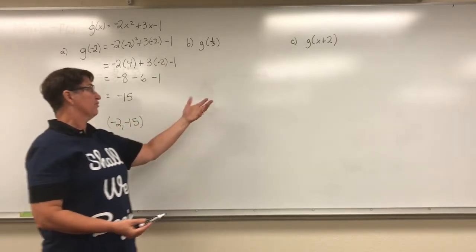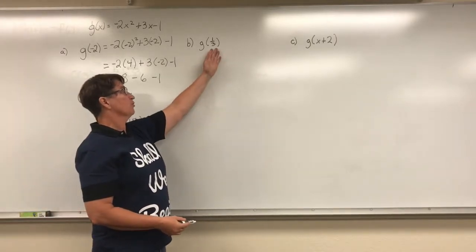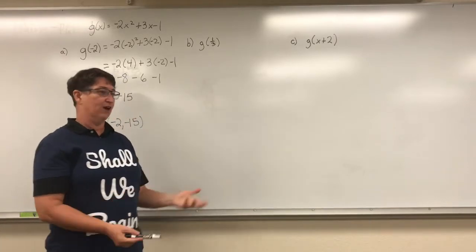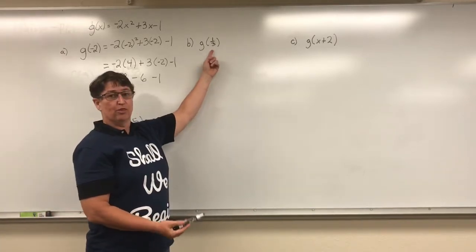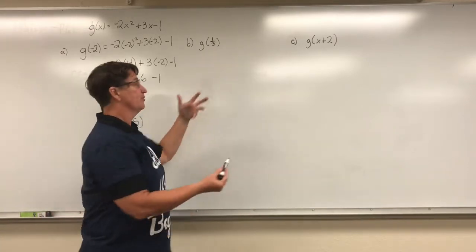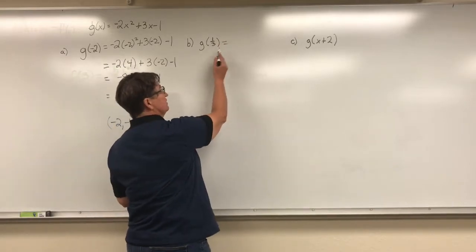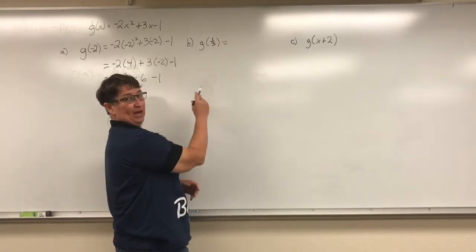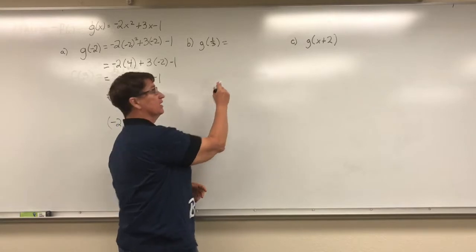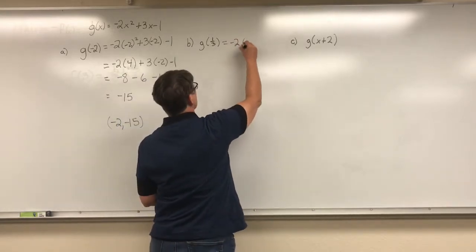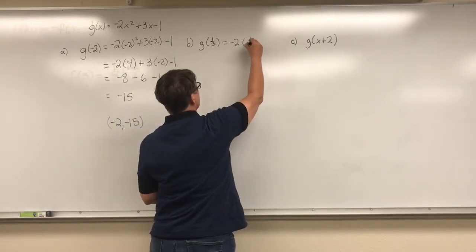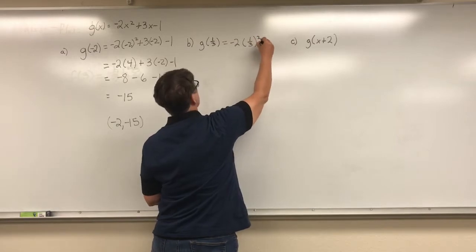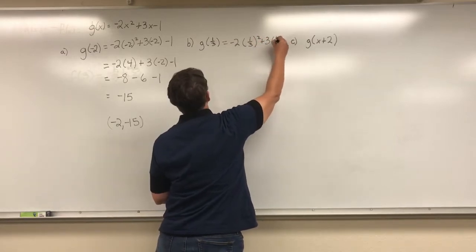We're going to do another one. This time we're going to evaluate the function — or find our y value — when x is 1 third. So again, all I'm doing is substituting this x value into my quadratic function. So everywhere I see an x, I'm just going to put this 1 third.